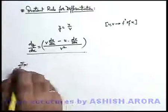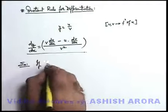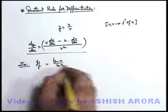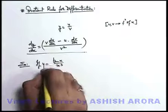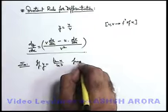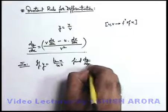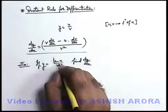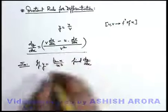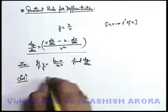For an example, if we are given y is equal to tan x upon x cube, and we are asked to calculate the value of d-y by d-x, we will directly use this particular quotient rule relation for the calculation.